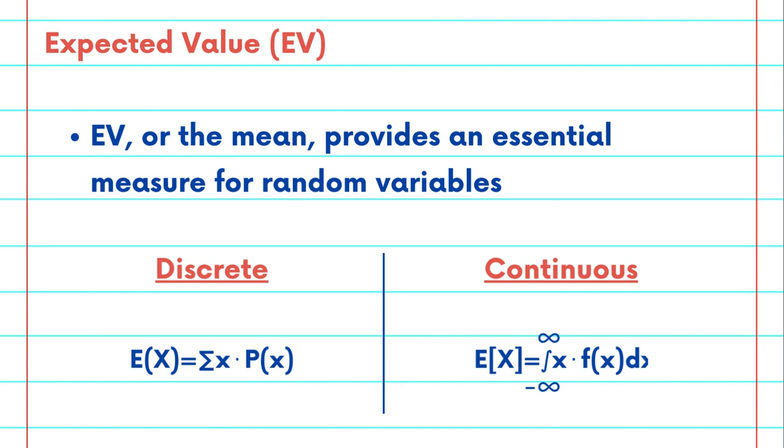For continuous random variables, the expected value is calculated as an integral over the entire range, where the value of the variable is multiplied by its probability density function.